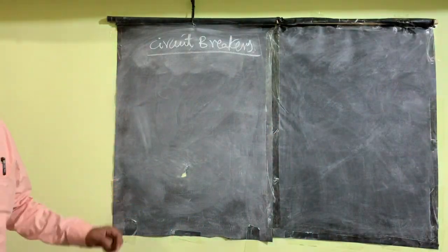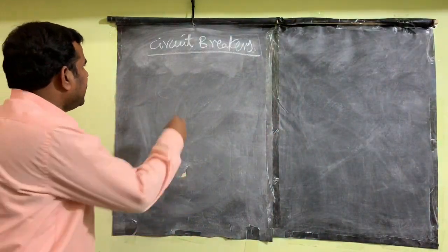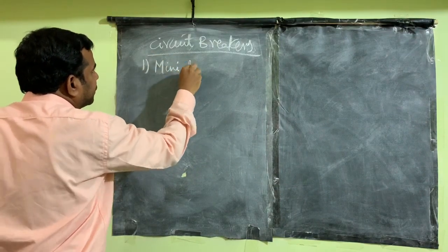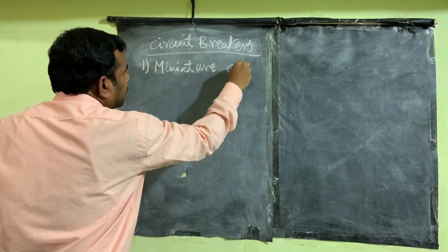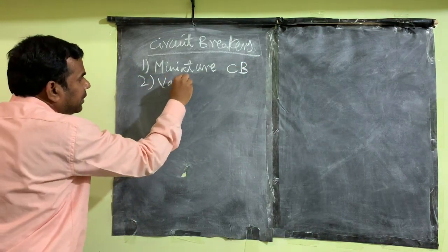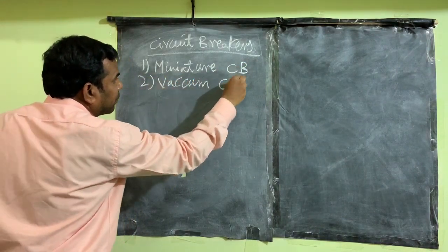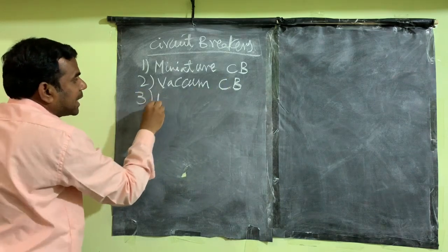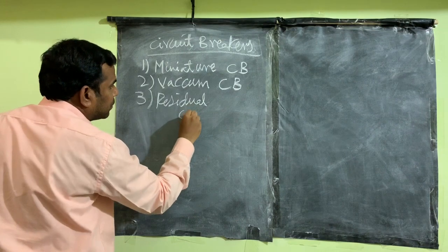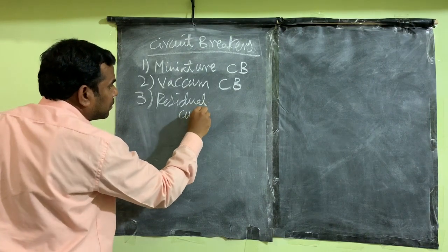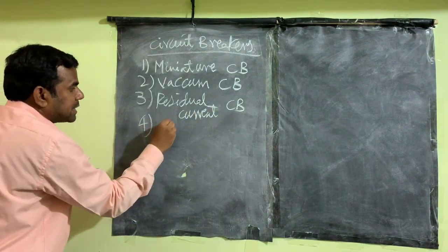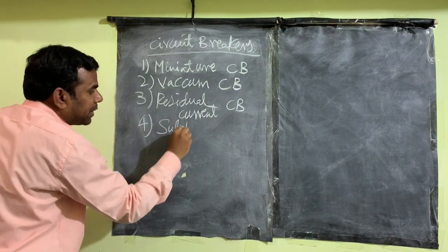There are several types of circuit breakers available, such as miniature circuit breaker, vacuum circuit breaker, residual current circuit breaker, and sulfur hexafluoride circuit breaker.